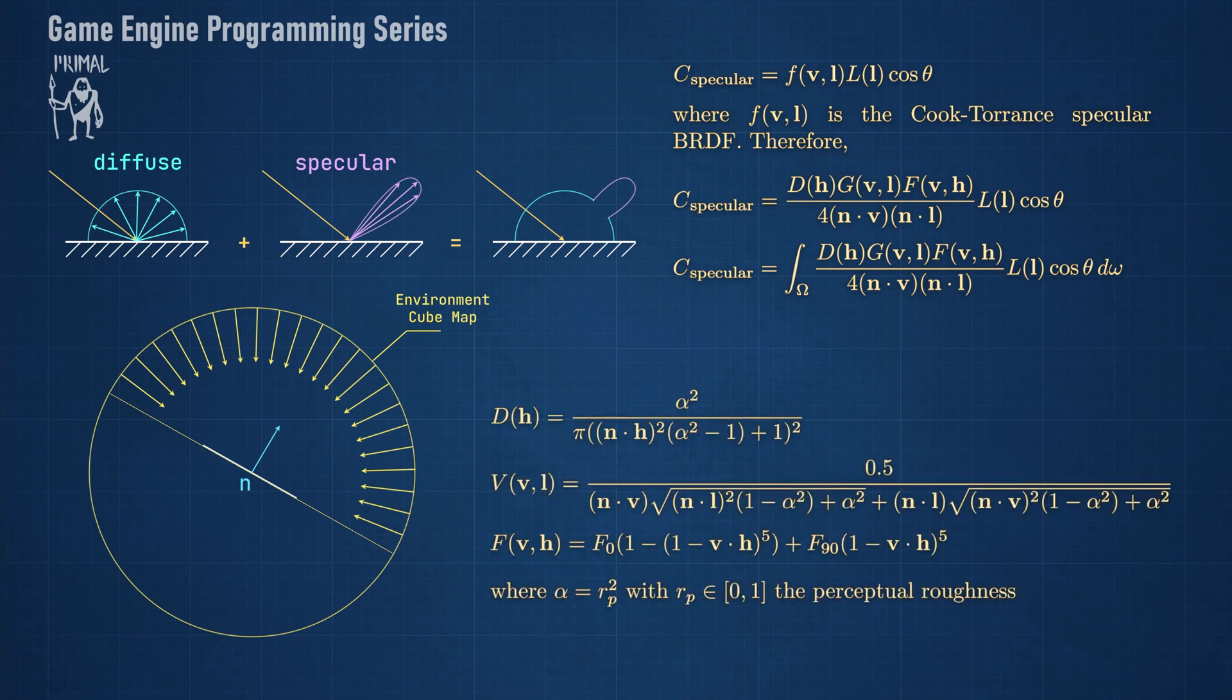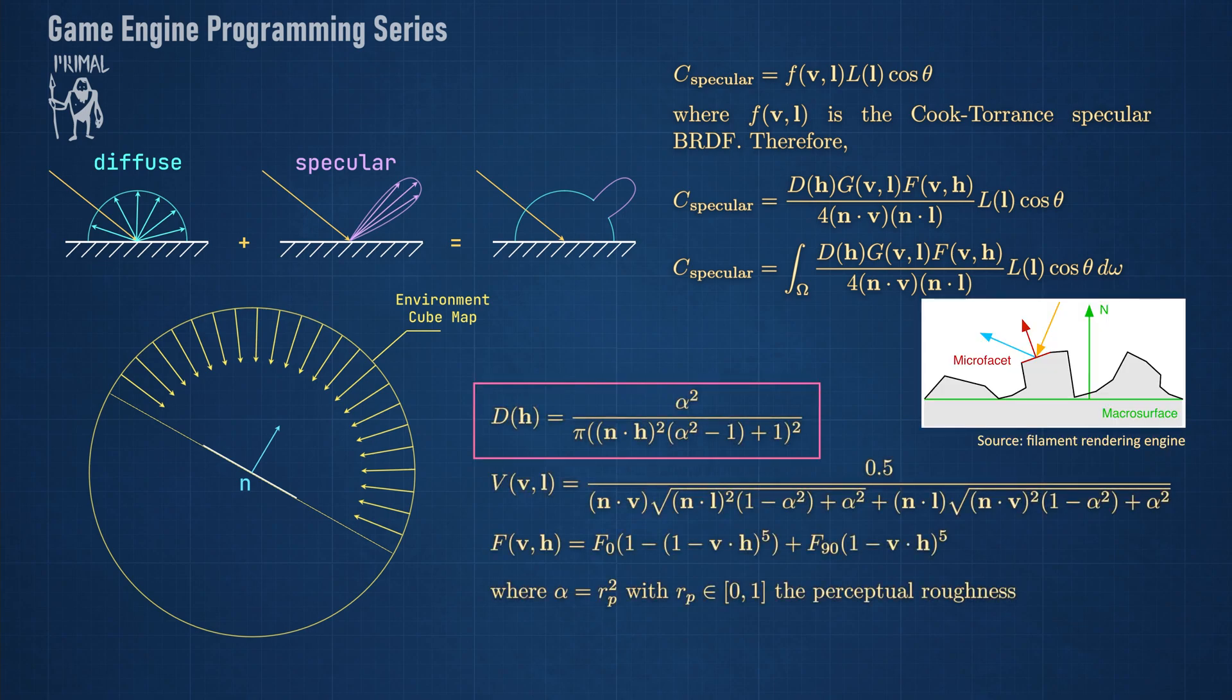To recap, this is the normal distribution function that determines what portion of micro-facet normals happen to be facing in the same direction as the halfway vector depending on the surface roughness. The halfway vector is the vector halfway between the view and light vectors. Here we use the Trowbridge Reitz distribution function.